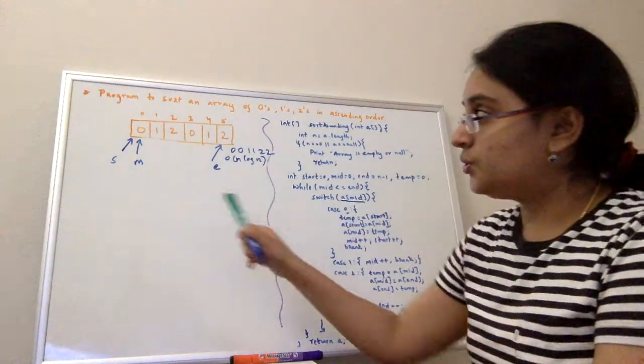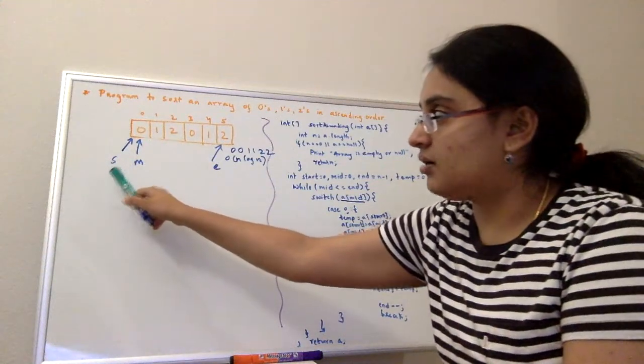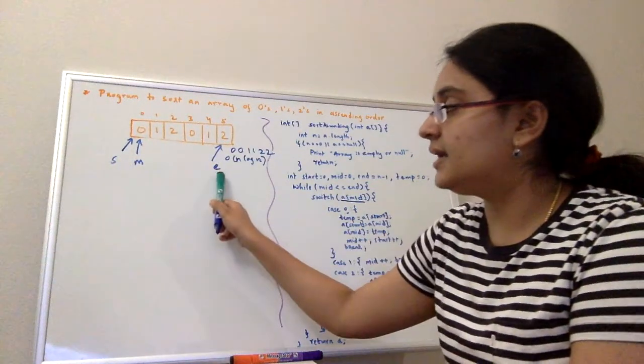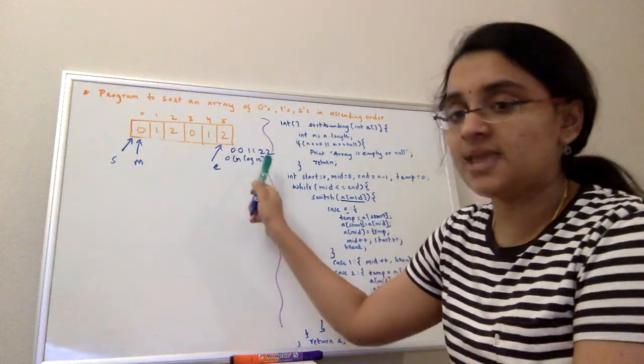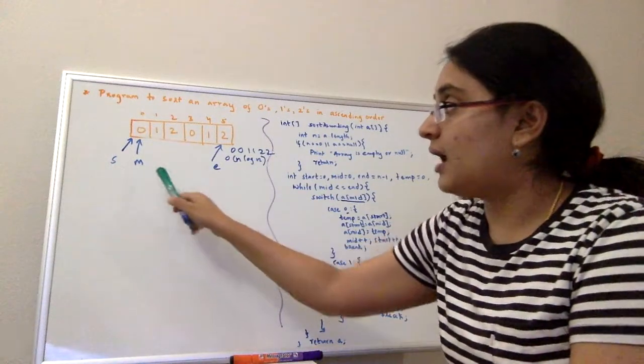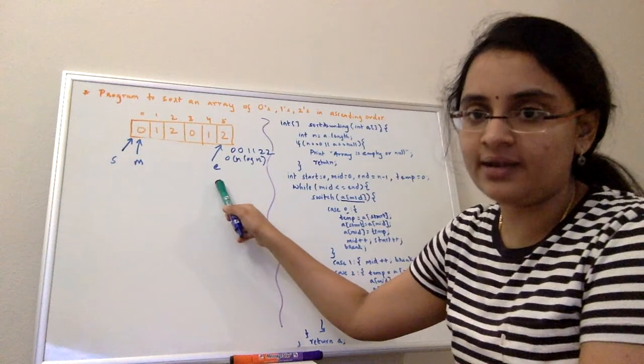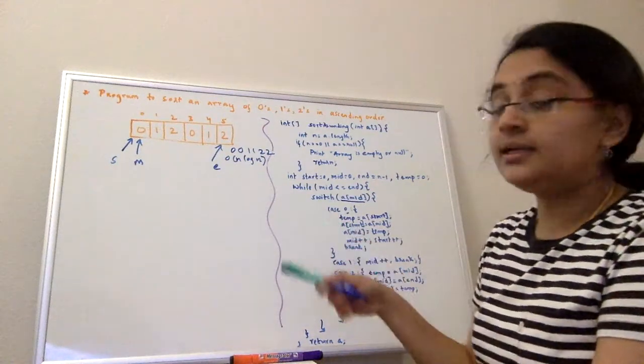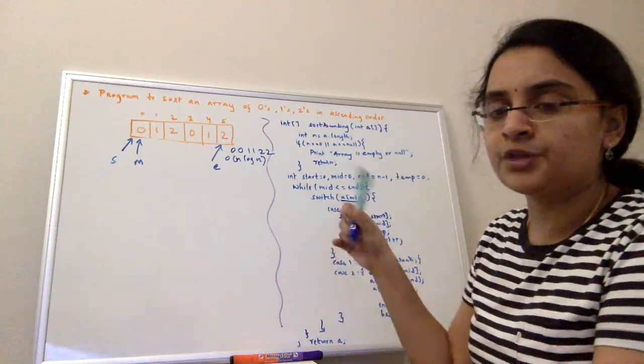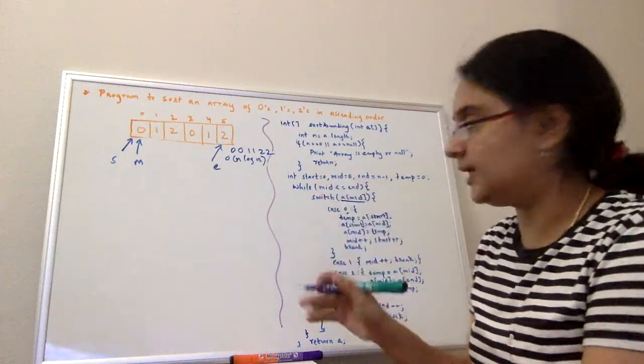Like I told you, mid oscillates between the starting and ending index, but it can't go past end. So our looping condition is mid should be less than the end. Only till then you should do the swappings and sort the array.